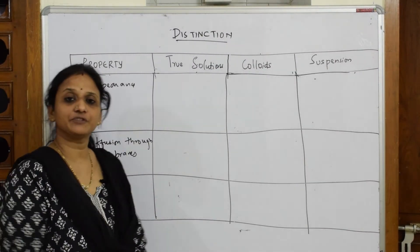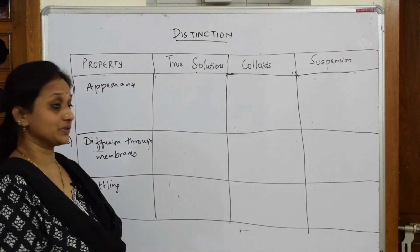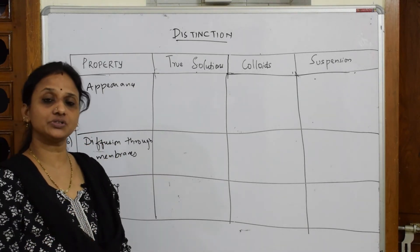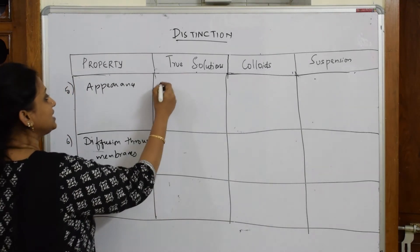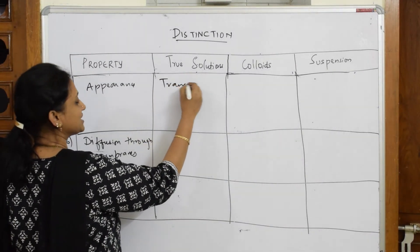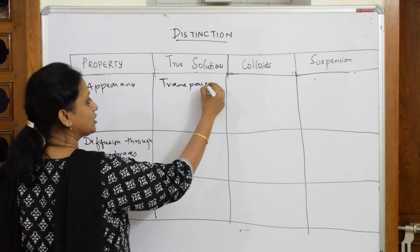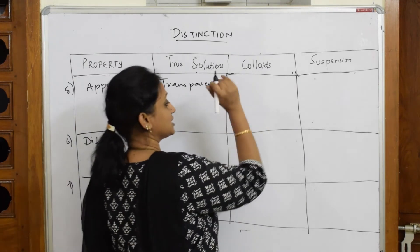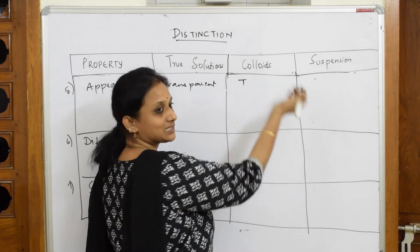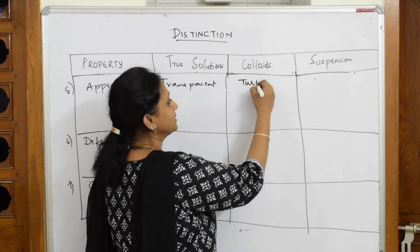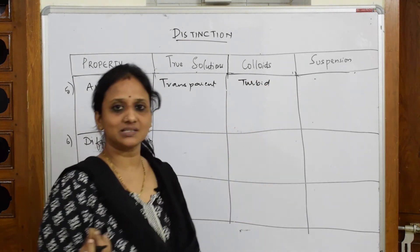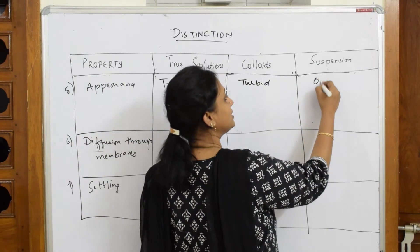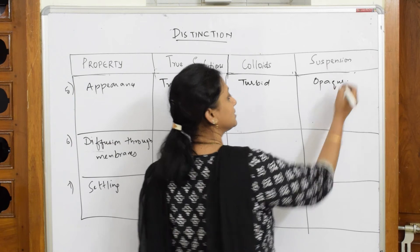Now appearance — how does it look to the naked eye. True solutions are transparent because the particle size is less than 1 nanometer. Colloids are turbid — for example, a starch colloid has a sticky, turbid appearance. Suspensions are opaque in nature.